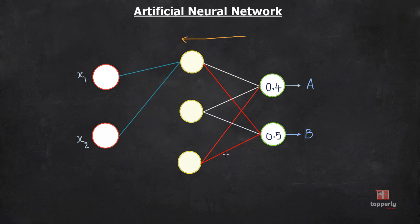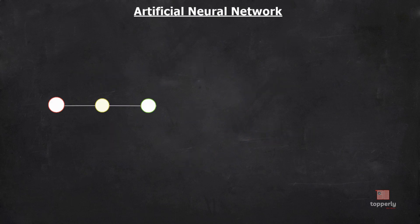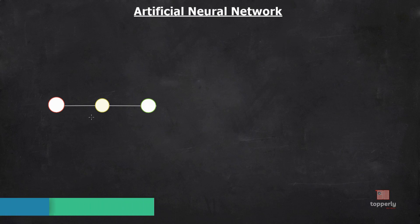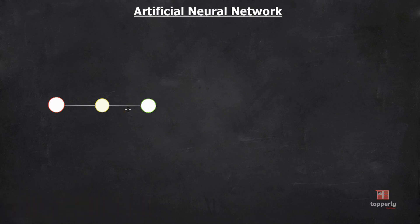Now let's start the mathematics behind the backpropagation algorithm using an extremely simple network where each layer has only a single neuron. The output of this network is determined by the weights connecting successive neurons, and our goal is to understand how sensitive the output is to these weights — that way we will know which adjustments decrease the cost function most efficiently.